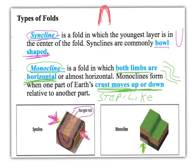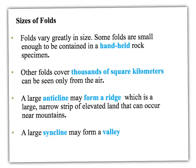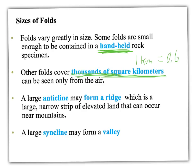The force causing the monocline is one side moving up compared to the other. Folds themselves can sometimes be really small — you can go in your backyard, dig down, find some rocks, and see folds in a small rock specimen. They can be tiny and within a single rock, or they can cover thousands of square kilometers — the same as thousands of square miles, since one kilometer equals about 0.6 miles.